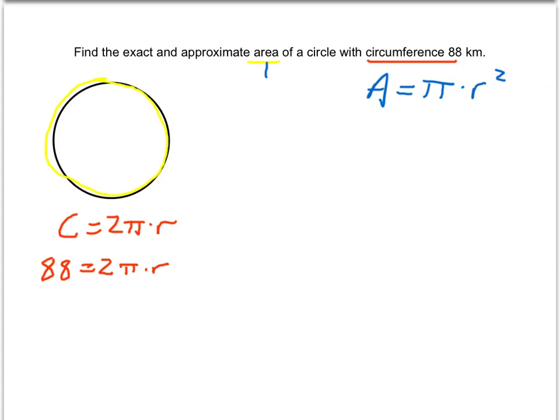So that means if we divide both sides by 2π, then the radius is equal to 88 divided by 2π, which simplifies one step further. 88 divided by 2 is 44, so that means our radius is 44 divided by π.